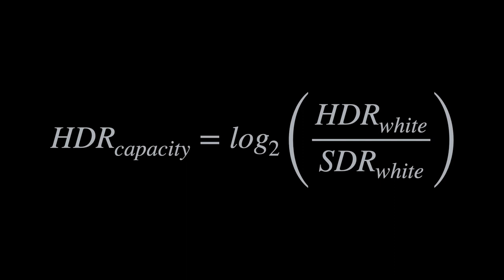To explain that properly, I must first talk about HDR capacity. I define HDR capacity to be the property of the display that expresses the ratio of the peak luminance to the SDR or diffuse white level. The formula looks very similar to the one used for computing the gain map: you take the HDR white level divided by the SDR white level and take the log base 2 of the result.